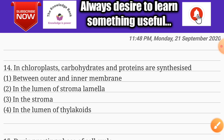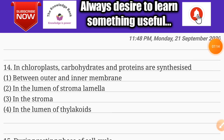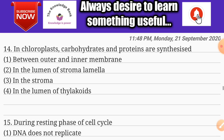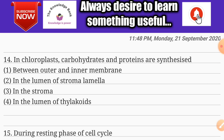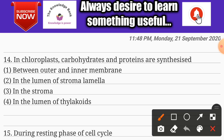Question number fourteen: in chloroplast, carbohydrates and proteins are synthesized — options are between outer and inner membrane, in the lumen of stroma lamella, in the stroma, and in the lumen of thylakoids. The correct answer is option three: in the stroma.